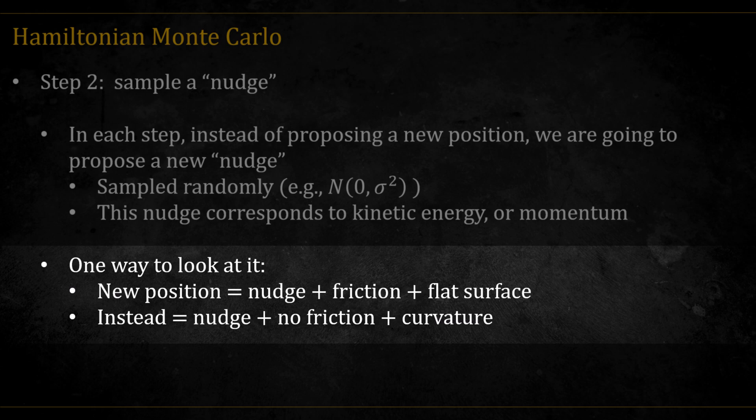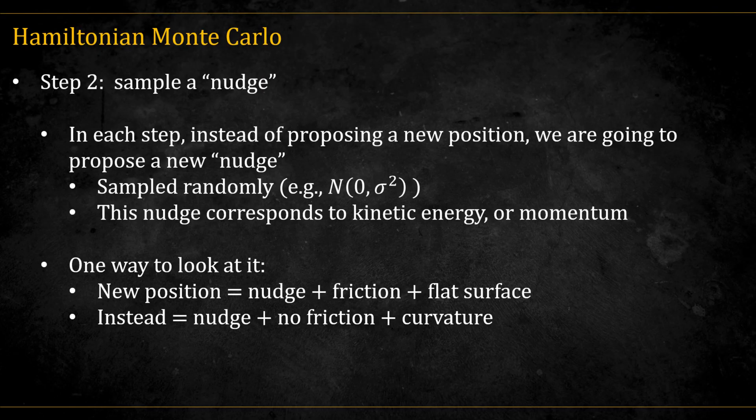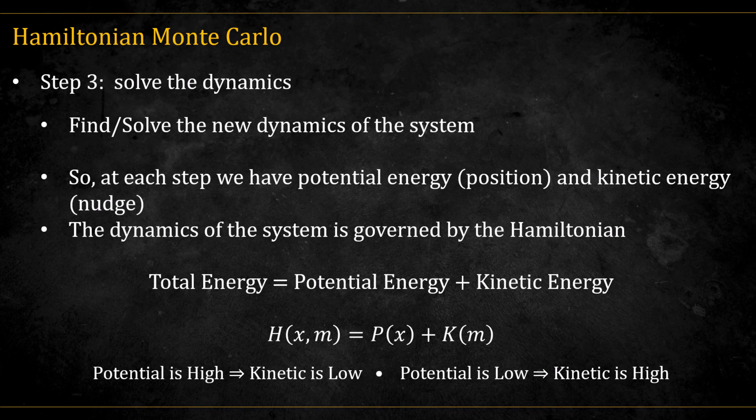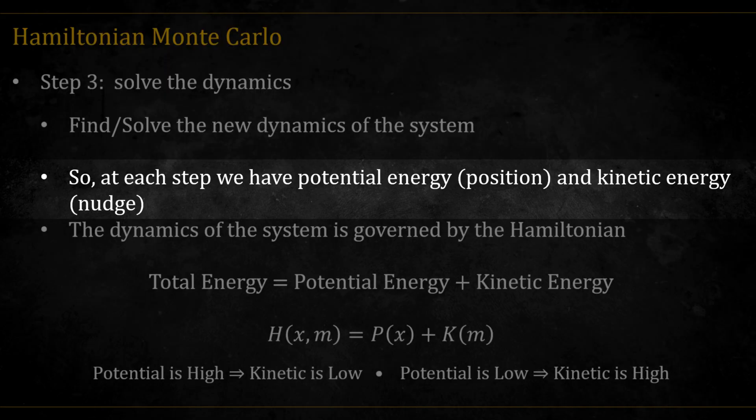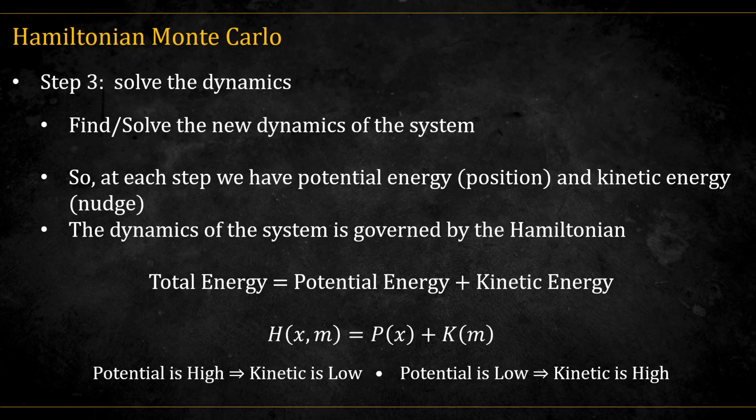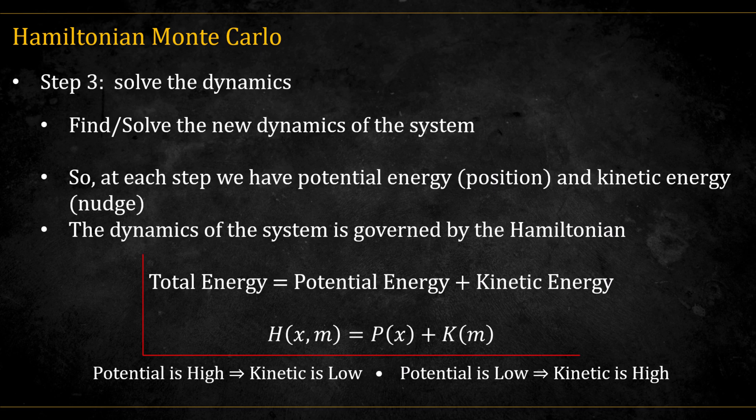The third step is to solve the dynamics of the system. This simply means to understand how the ball will move through time. So we have some initial potential energy, the position, and initial kinetic energy, the nudge. The evolution of these quantities is governed by the Hamiltonian, which describes how the system's total energy behaves. In an ideal frictionless setup, total energy is conserved. It's always the sum of potential and kinetic energy.